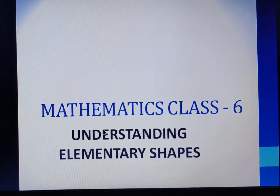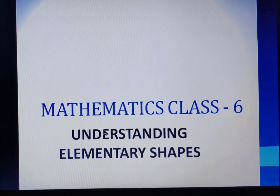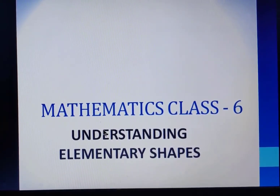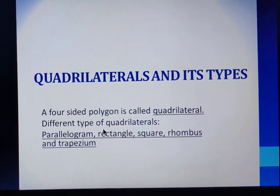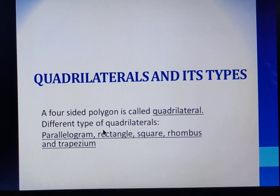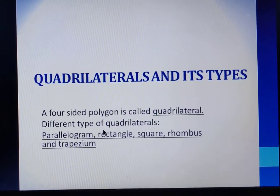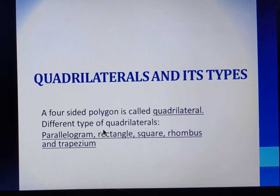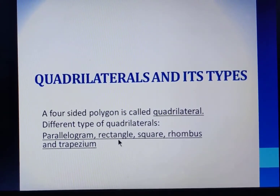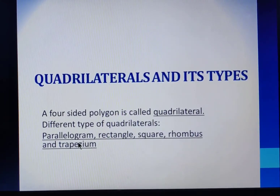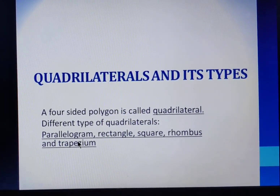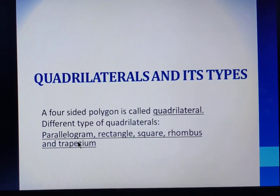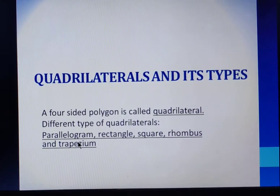Namaste students, we are continuing with the chapter 'Understanding Elementary Shapes' and today we are going to learn about quadrilaterals and their types. In the previous chapter of geometry we have learned that a quadrilateral is a four-sided polygon and the different types of quadrilaterals are parallelogram, rectangle, square, rhombus, and trapezium. In today's class we will see the properties of these different types of quadrilaterals.